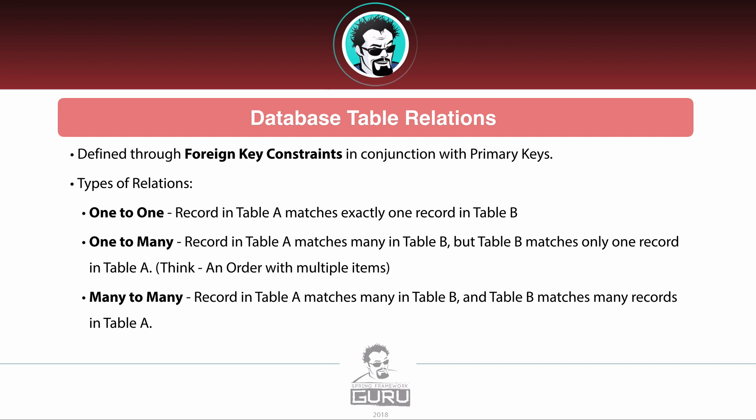A good example of one-to-many is an order with multiple line items. If I place an order on Amazon and buy three items, I'll have one order record with order-type data — who I am, my name, where it's going — and then multiple line items associated with that order. Another type of relationship is many-to-many, where many records in table A match many records in table B and vice versa. A good example would be students and courses: many students enroll in many different courses, and those courses also have many students in them.